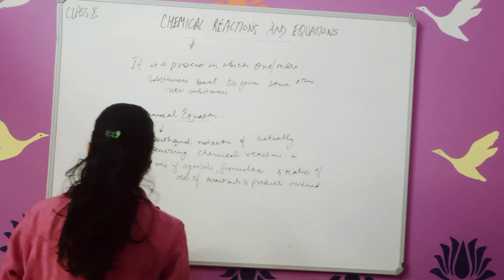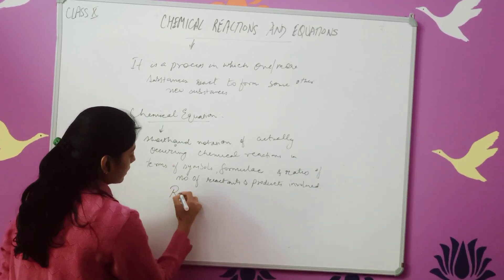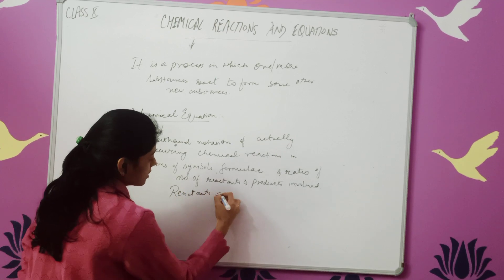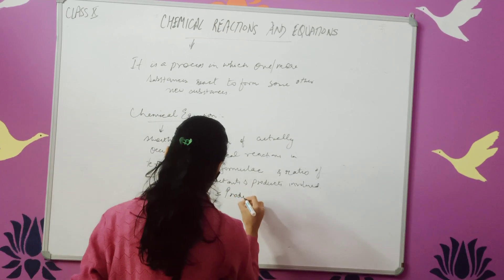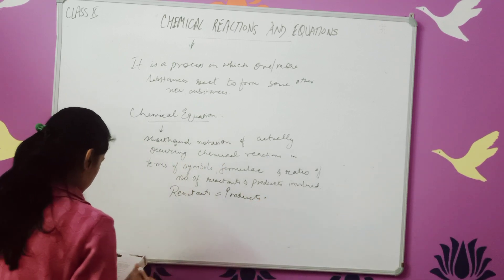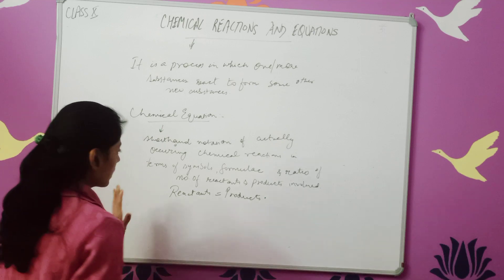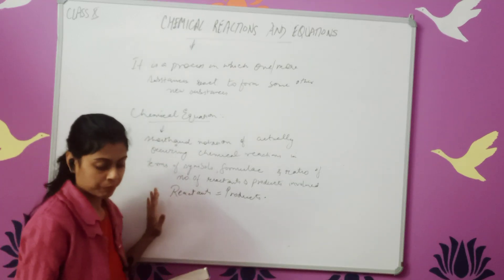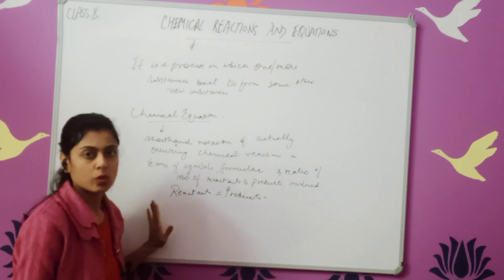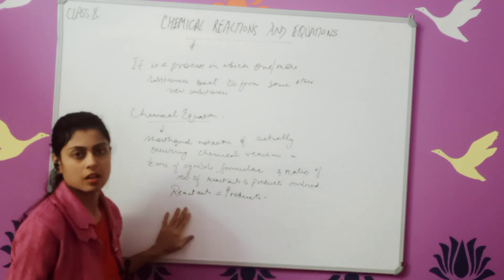In a chemical reaction, reactants are equal to products. A complete balanced chemical equation represents reactants, products, and the conditions in which the reaction occurs.